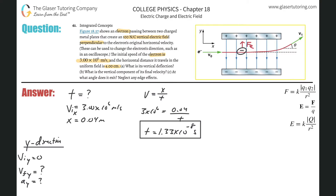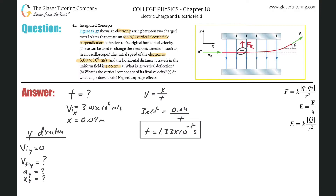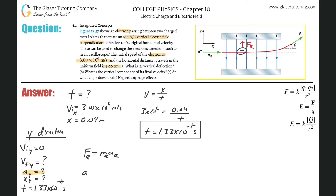The acceleration in the y direction is related to the electric force via F equals ma. So the electric force on the electron equals the mass of the electron times its acceleration. I'm after the acceleration, so it's the force divided by the mass. I don't know the force yet, but I know the electric field strength equals force divided by charge, so force equals E times q. The electric field strength is 100 newtons per coulomb, as given.